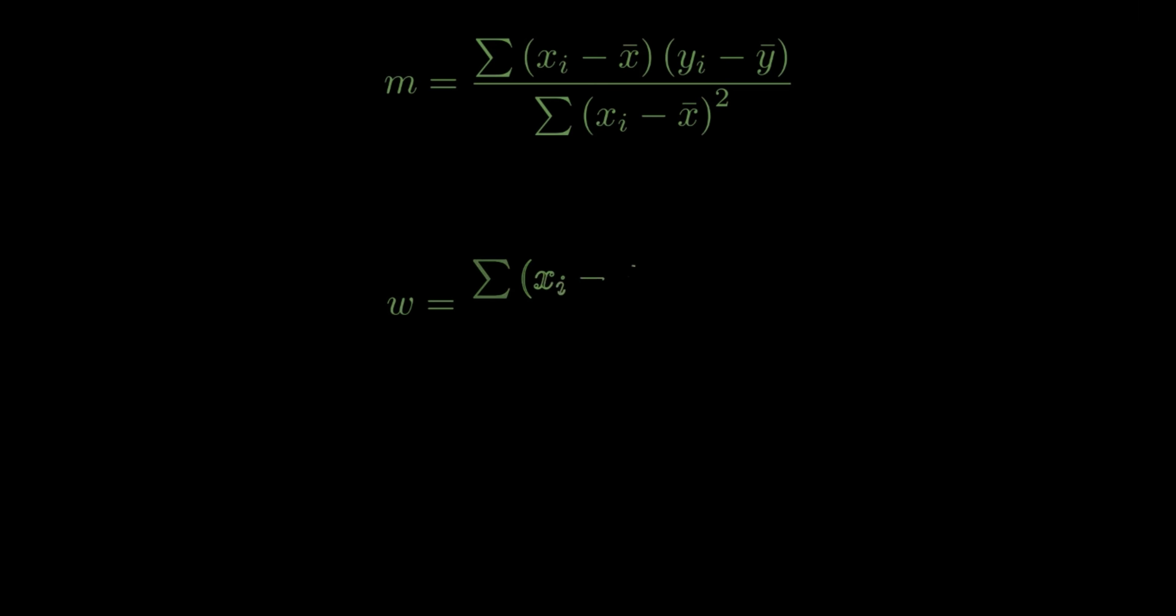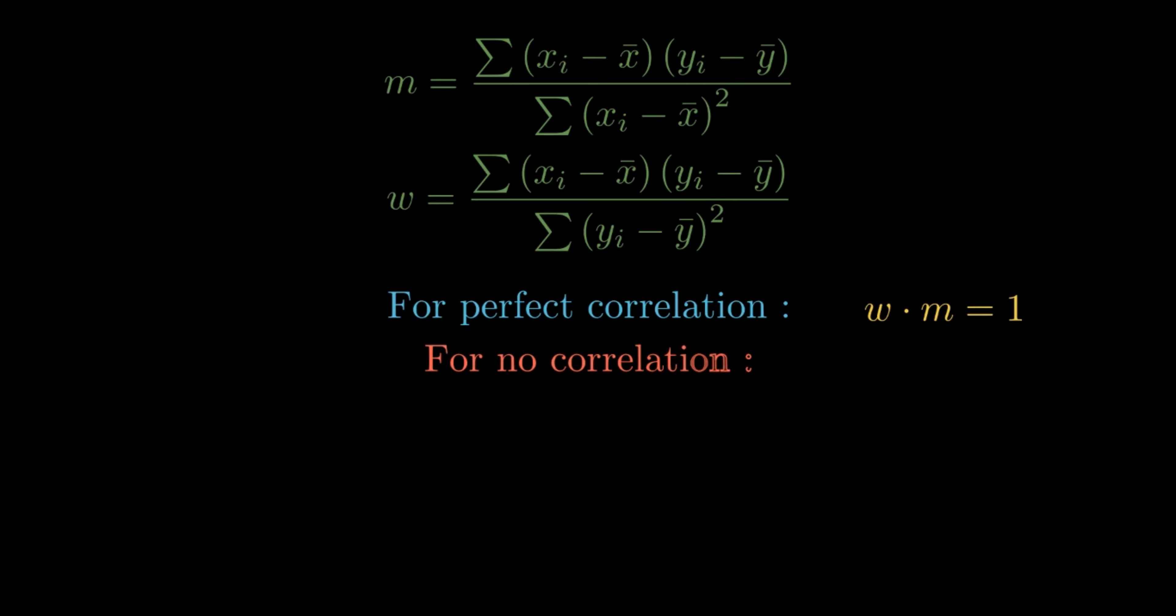So we have slopes of both the lines when one predicts x from y and other predicts y from x. Now from the piece of information or note that we just made earlier, remember in the second section: for perfect correlation, wm should be equal to one, and for no correlation, wm should be equal to zero, as even if w equals zero or m equals zero, it'll mean that y is not dependent on x or vice versa.